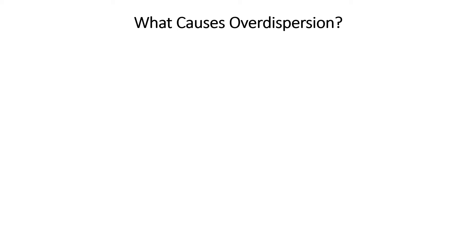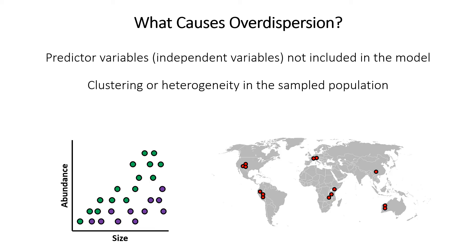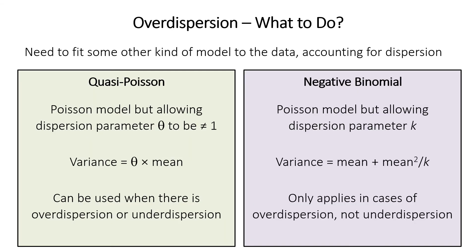Why does over dispersion occur somewhat commonly in real datasets? There could be a variety of reasons: one possibility is that there are predictor variables we haven't included in our model, so we really have a mixture of multiple different Poisson distributions. Alternatively, there may be some underlying clustering or heterogeneity in our sample from the population. Finally, there might be an excess of zero counts — something called zero inflation — which we'll discuss shortly.